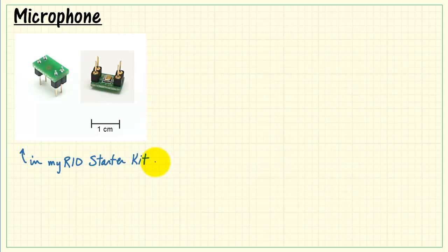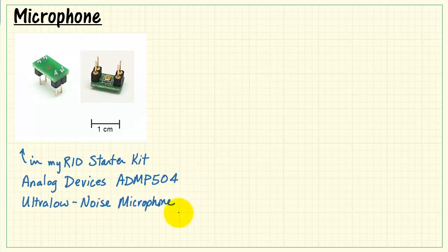Here's the microphone that's included with the MyRIO Starter Kit. This is the Analog Devices ADMP504. It's the ultra-low noise microphone.